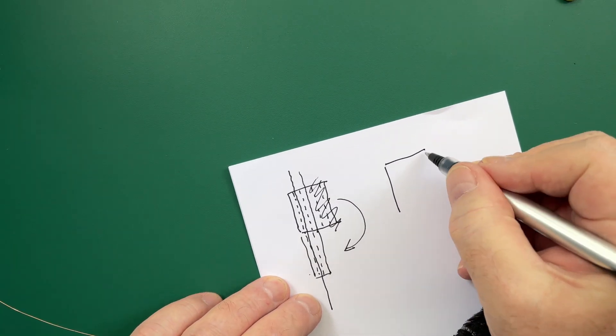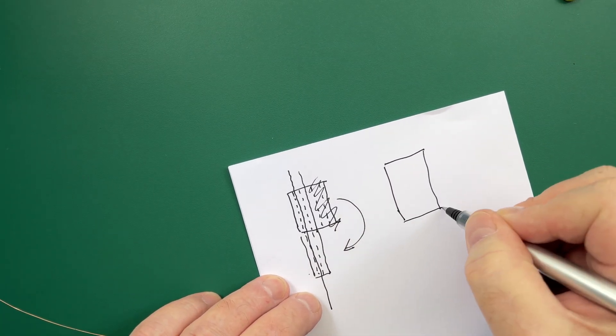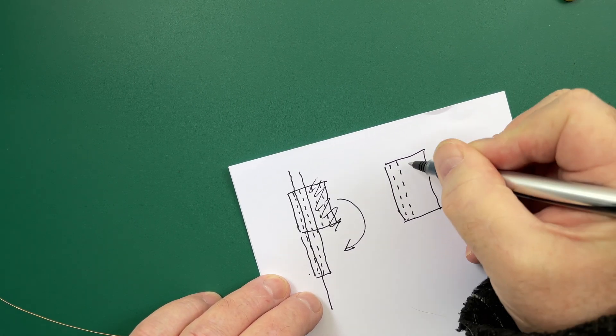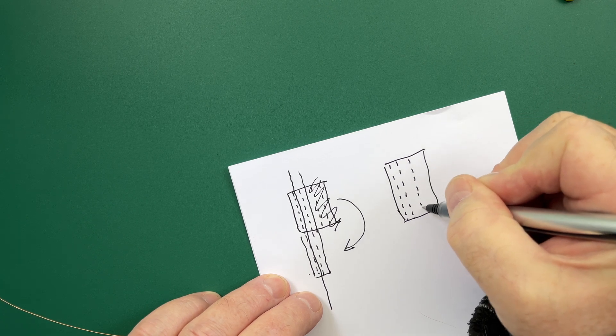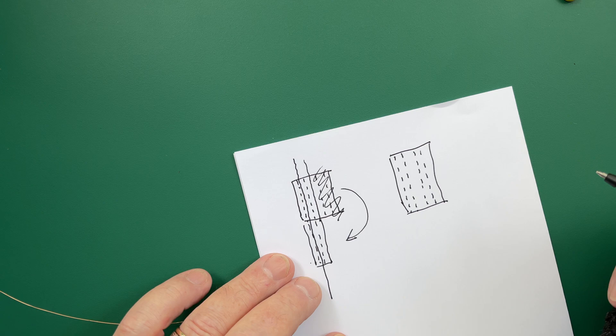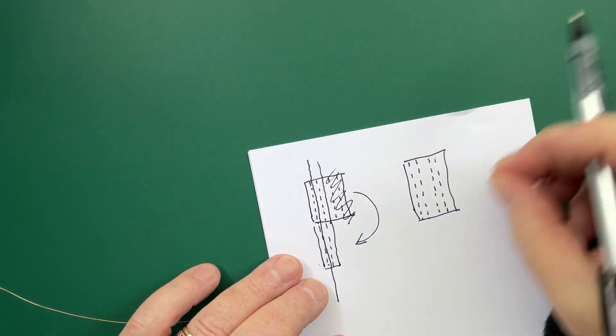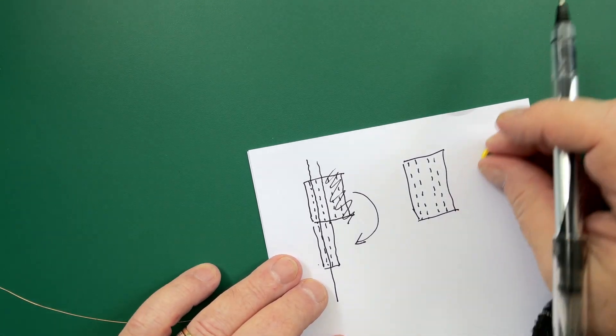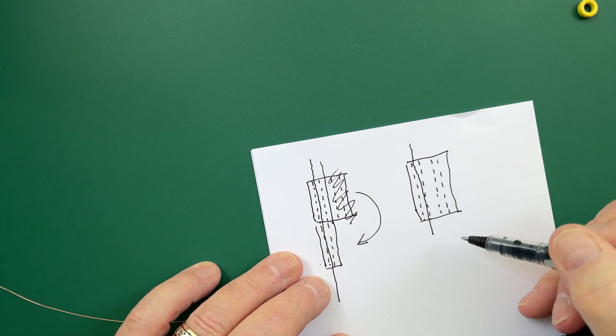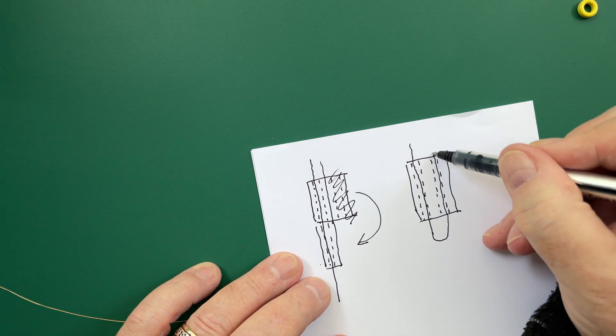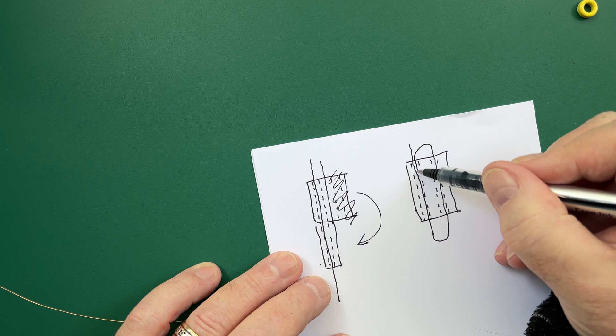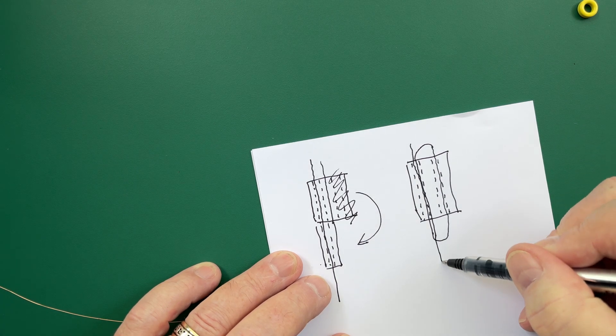So when we've got our binocular toroid with our two holes through it, what this allows us to do is have half a winding, which you can't do with a standard toroid. So you can have a wire through and that is half a winding. You can pass it back through and that is one winding. We can go through again and that is now one and a half windings.